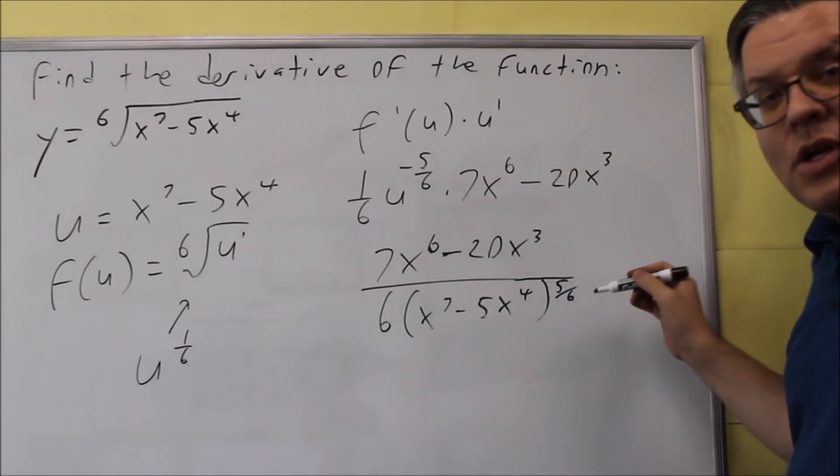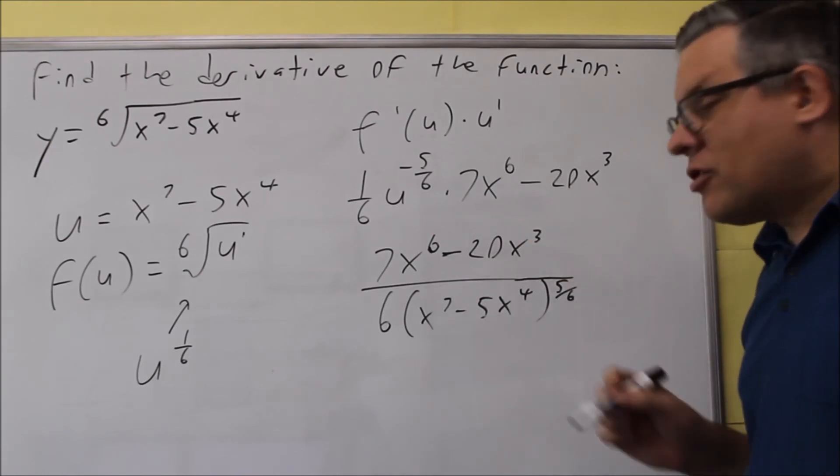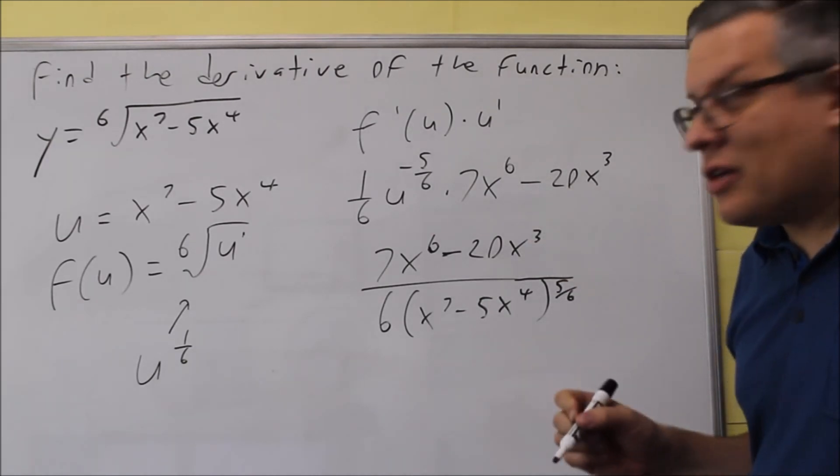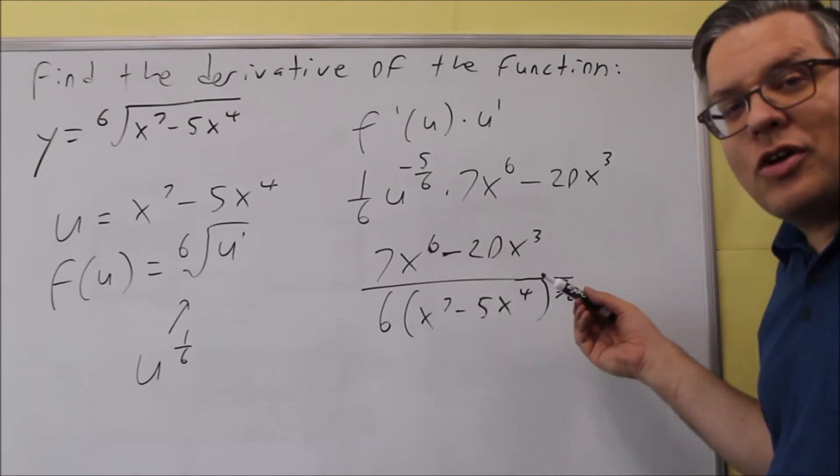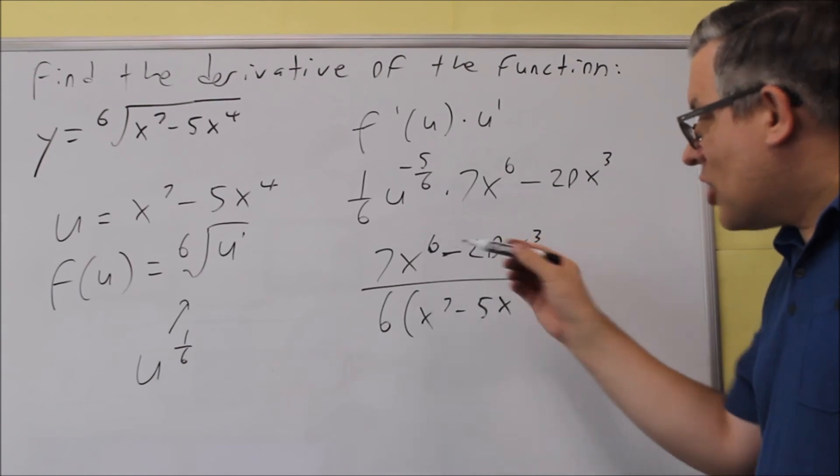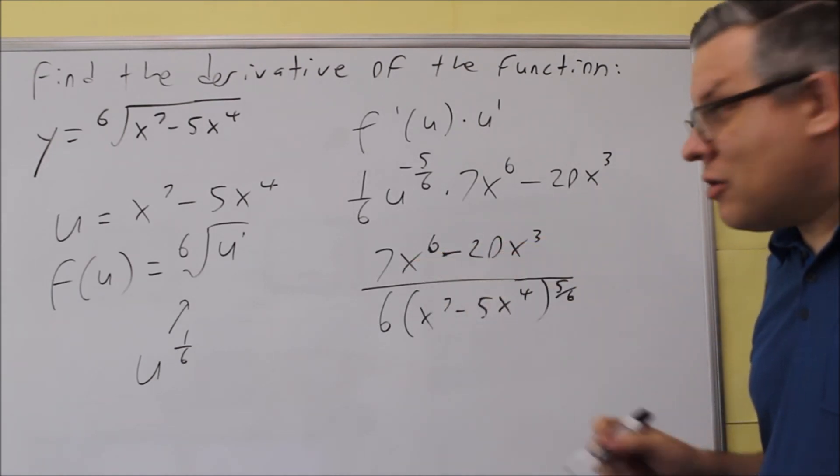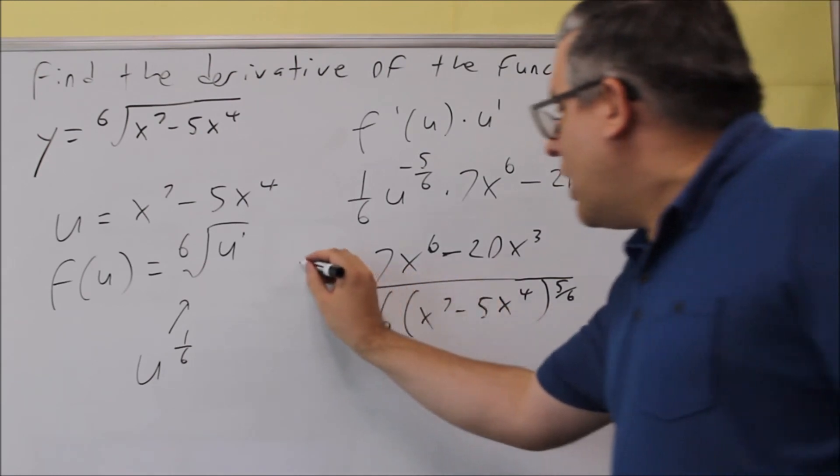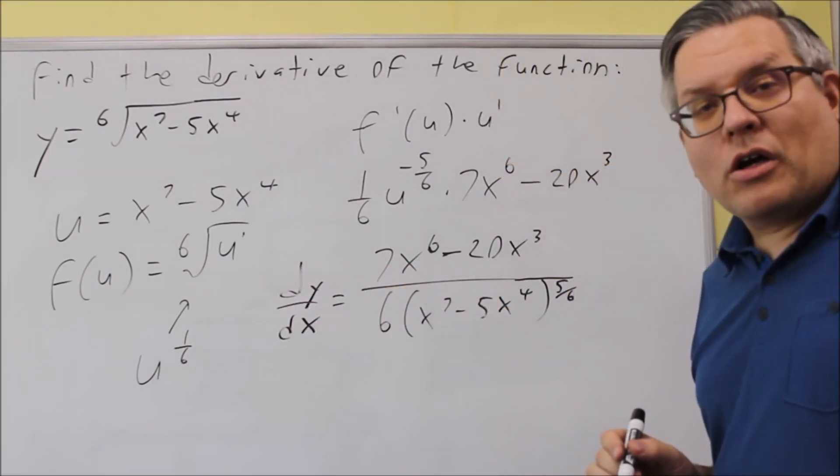Since we're putting that on the bottom, that exponent becomes positive. From here, you could factor out the x if you wanted to, but it's not necessary. We'd want to factor something out if we could cancel something on the bottom, but in this case we can't. Six isn't divisible by anything we have there. So this would be our final answer, our dy/dx.